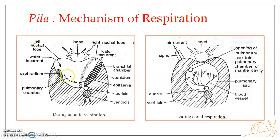The water that moves inside flows in contact with the osphradium, which checks the quality of the water with respect to chemical composition and food. The water then moves over the epithenia ridge and enters the branchial chamber, where it washes the complete length of the ctenidium — all the lamellae — and then flows out through the right nuchal lobe as the water excurrent.